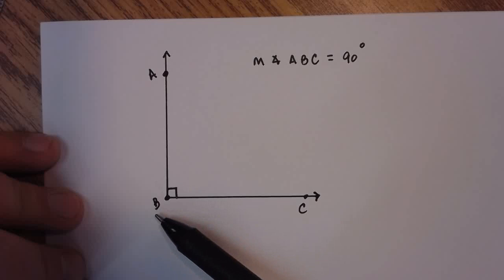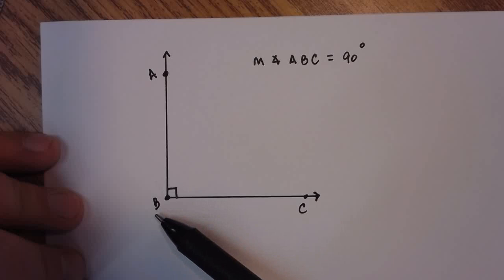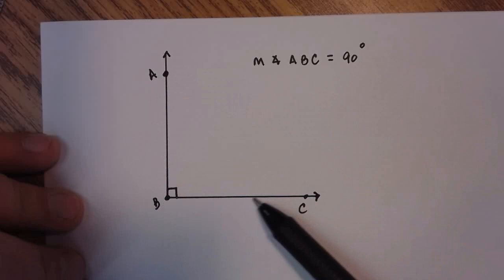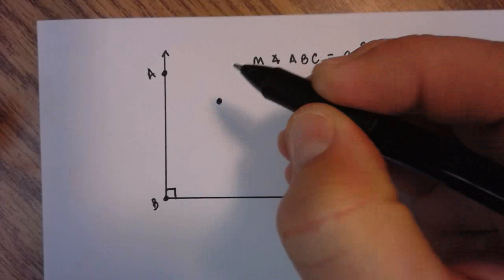Well since this only has one angle, you can also call this angle B. So you could name this in three ways: ABC, CBA, or just angle B. And the measure of angle ABC is a 90 degree angle, so this is a right angle.